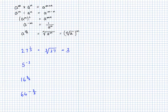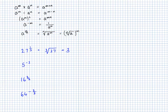The next one: 5 to the power of negative 2. This matches the rule: a to the power of negative m equals 1 over a to the m. So the negative power tells me to perform a reciprocal, and then I just power it by m. So here I will have 1 over 5 squared, which becomes 1 over 25.